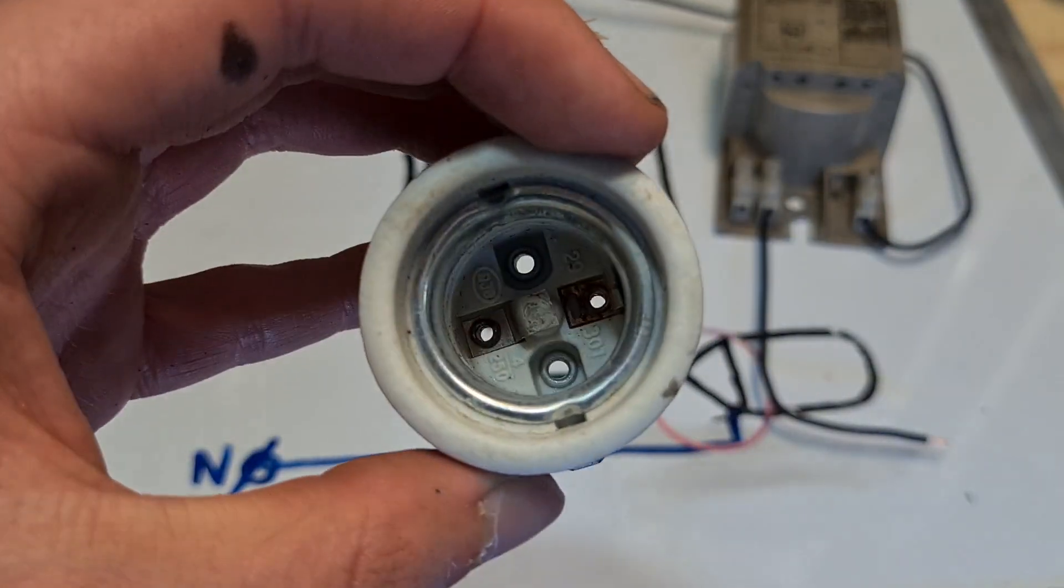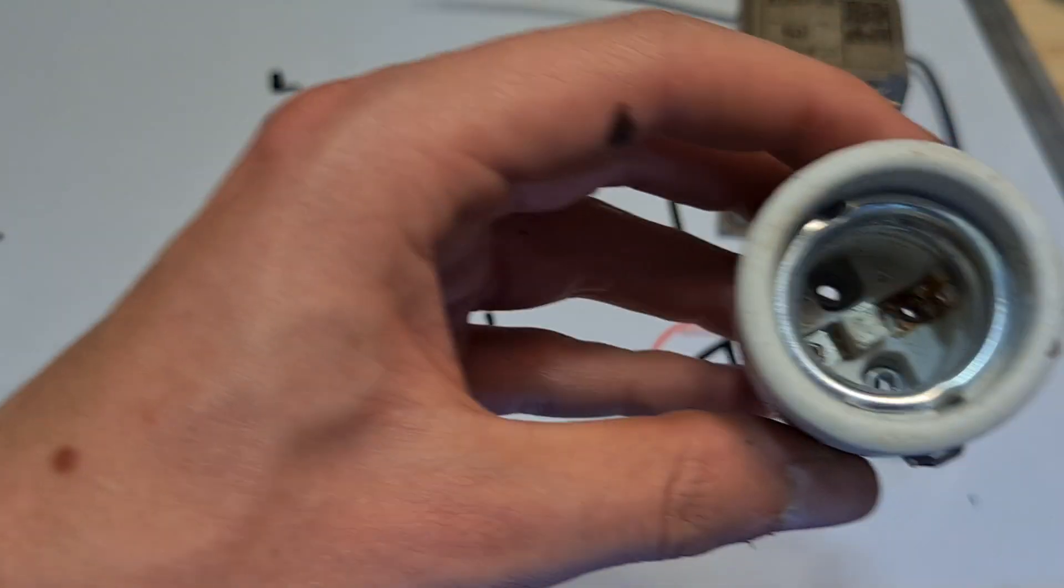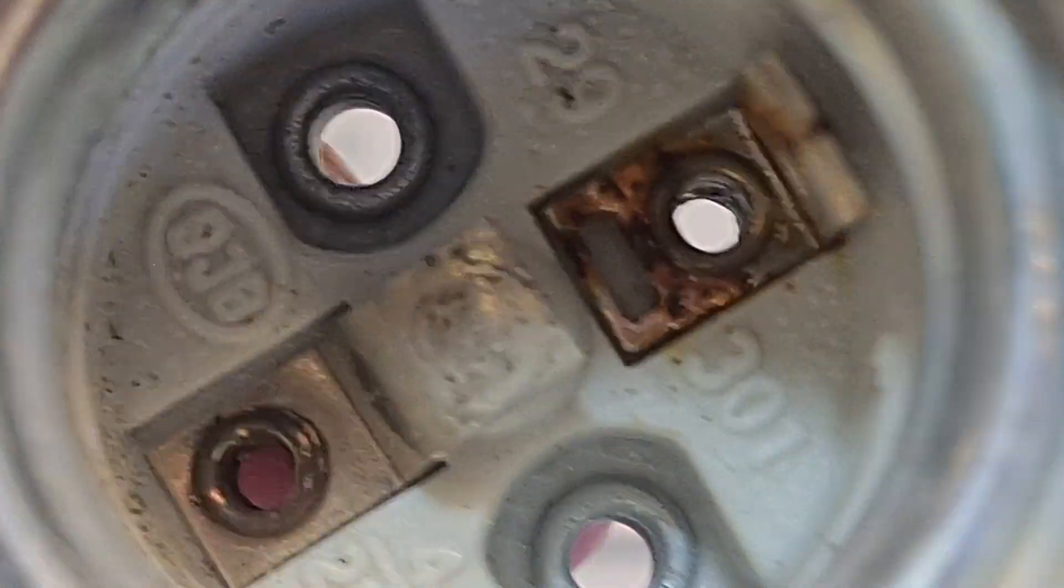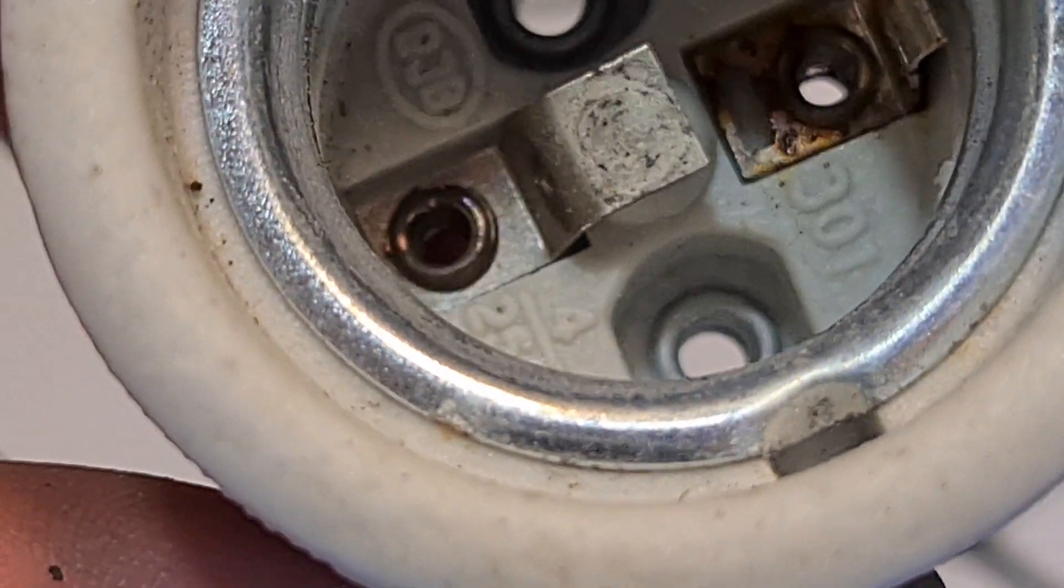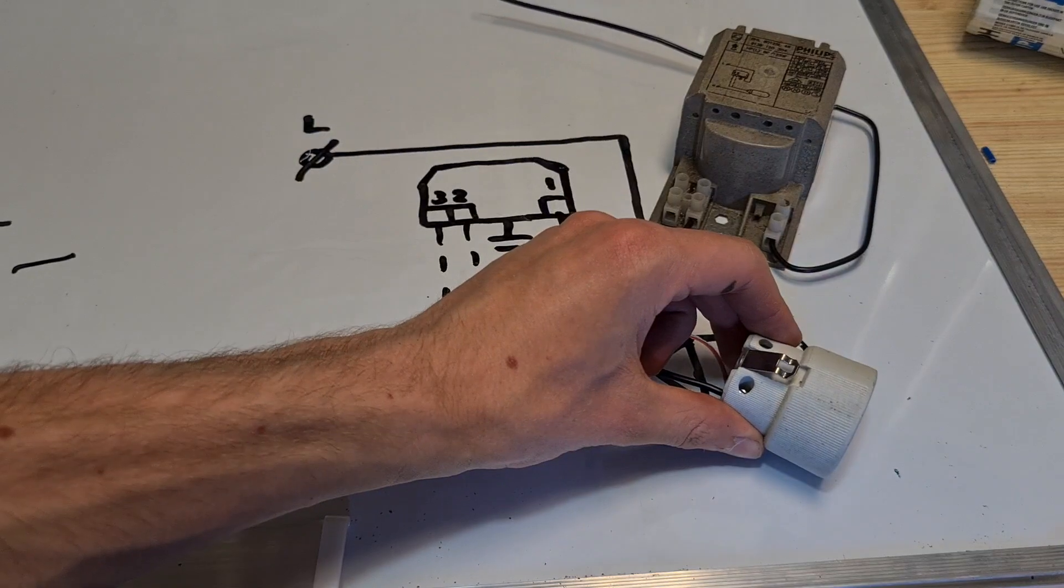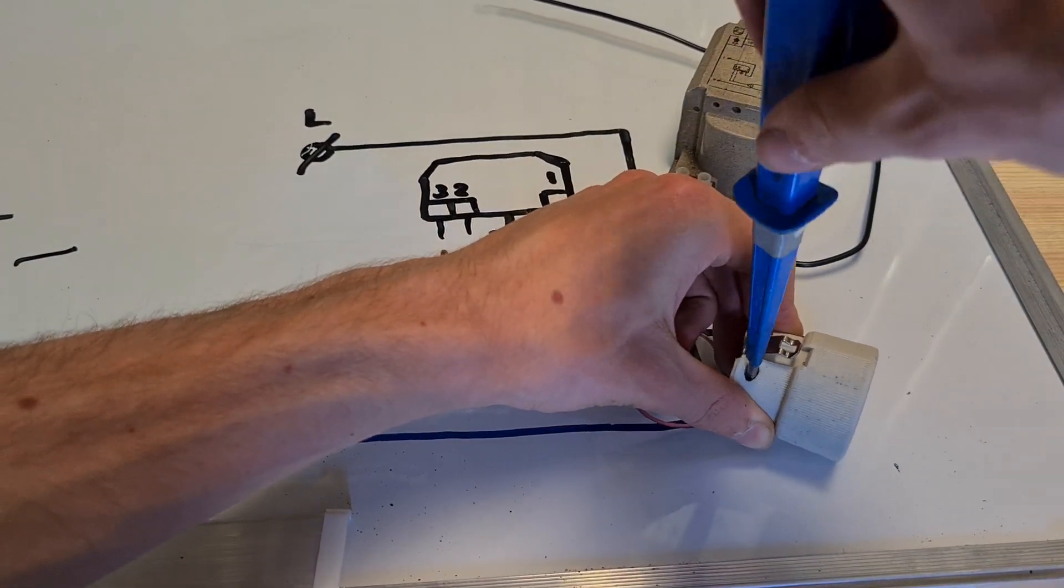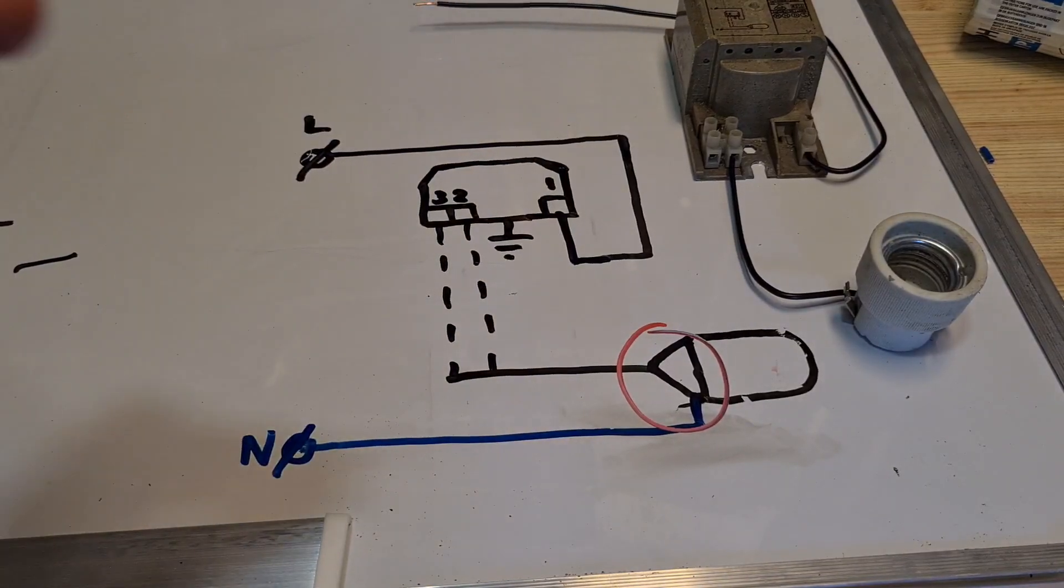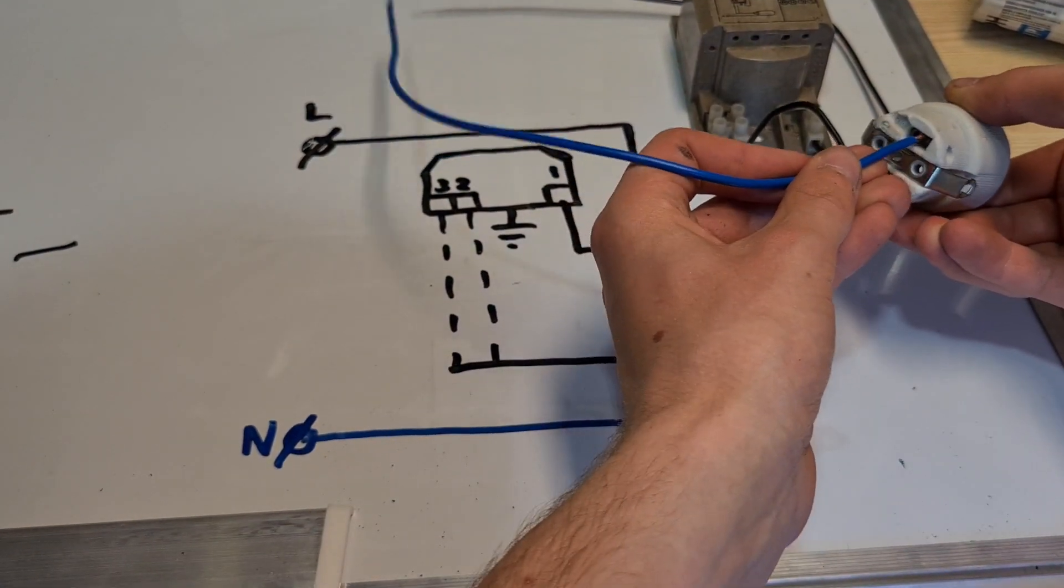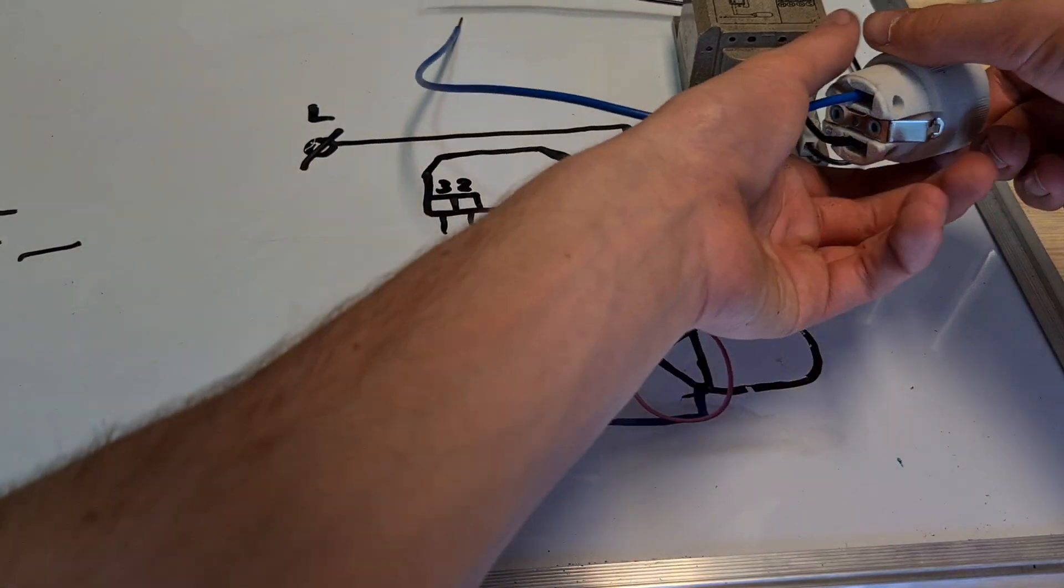Then you have the socket again, and again the thing that's in here in the middle. You want to connect the black cable there. And then you connect the other cable on the other point here.